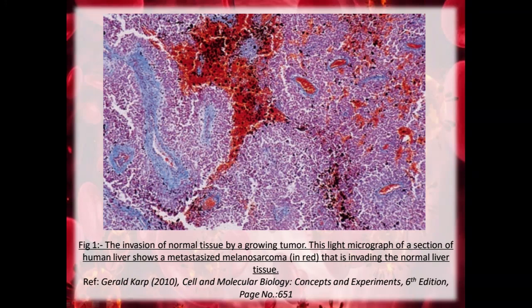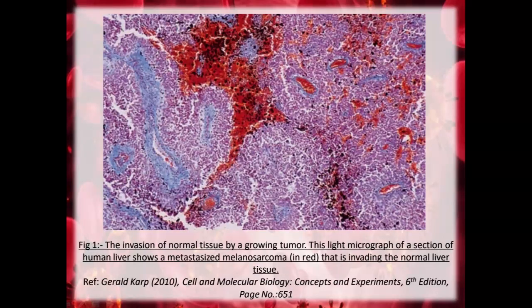In this figure we can see the invasion of normal tissue by a growing tumour. This is a light micrograph of a section of human liver that shows a metastasized melanosarcoma, which is red in colour, invading the normal liver tissue.